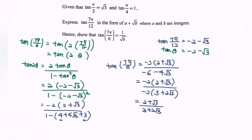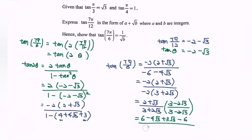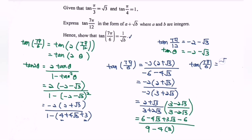Kindly simplify by multiplying by the conjugate (3 − 2√3) / (3 − 2√3). Expanding the numerator: 6 − 4√3 + 3√3 − 6, and the denominator: 9 − 4·3. Finally, tangent(7π/6) = −√3 / (9 − 12) = −√3 / (−3). Then (√3/3) × (√3/√3) = 3 / (3√3).